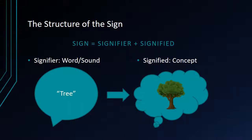Let us begin with Saussure's theory of the linguistic sign and how the word relates to reality. Rather than saying that the word suggests a thing, he divides up the linguistic sign into two parts: the signifier and the signified. The signifier is the word or sound — so that would be the word 'tree.' The signified is not the thing itself, not an actual tree, but rather the concept of a tree, what we think of when we think of a tree, what the tree means to us.